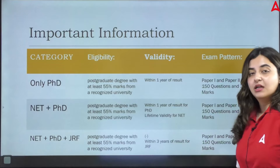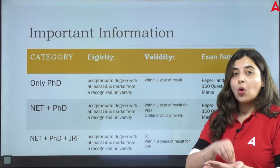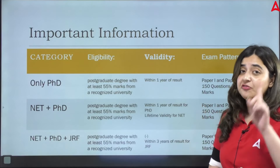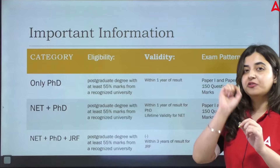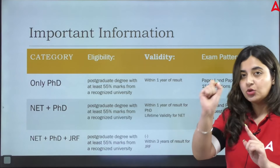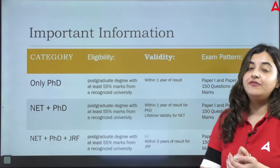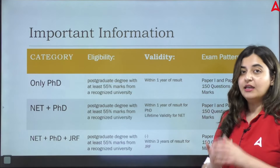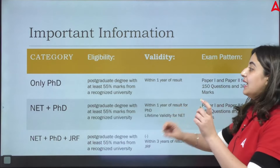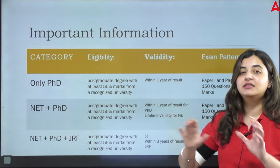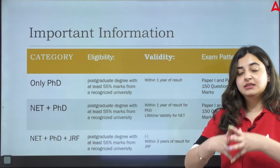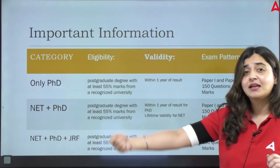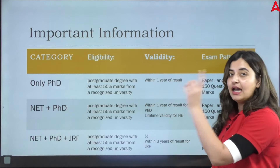Now, regarding validity — if you want to use the UGC-Net score to pursue a PhD in any university, you have to do it within a span of one year. For example, if your result comes on 1st June 2024, then by 1st June 2025 you must enroll yourself in a PhD course using your UGC-Net score. If you wish to apply as an assistant professor, that certificate has lifetime validity — you can use it as a lecturer even 30 years later.